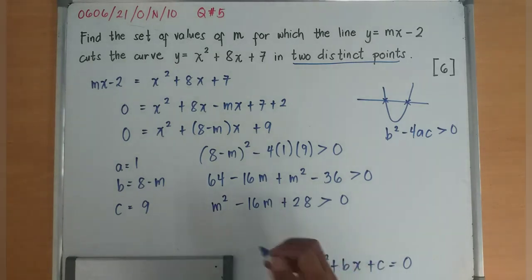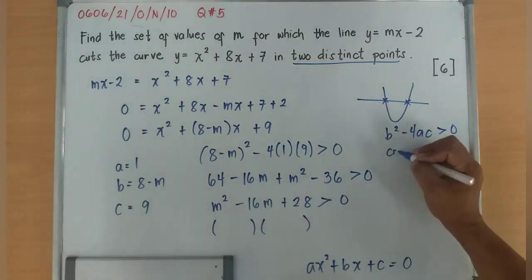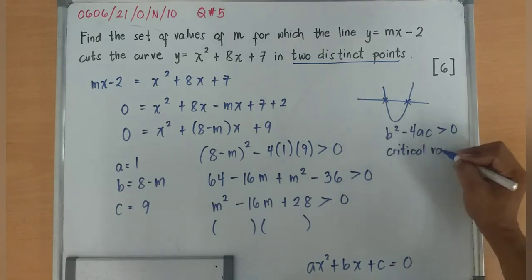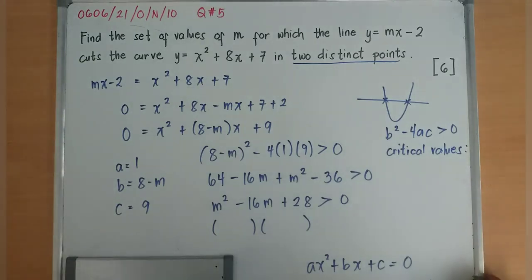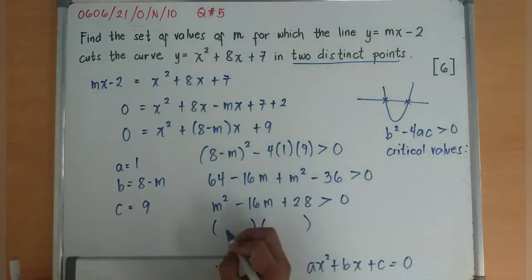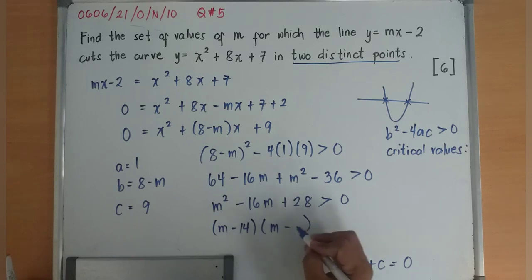Just to have this, I'll have now factorization. Remember, I need to find out the critical values. I have (m - 14)(m - 2).